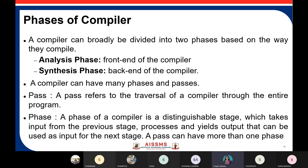Now we can start with the phases of the compiler. There are two phases: the analysis phase and the synthesis phase — the front end and the back end of the compiler. We already studied this in Unit 1. A compiler can have many phases and multiple passes. A pass refers to the traversal of the compiler through the entire program from start to end, whereas a phase is a distinguishable stage.